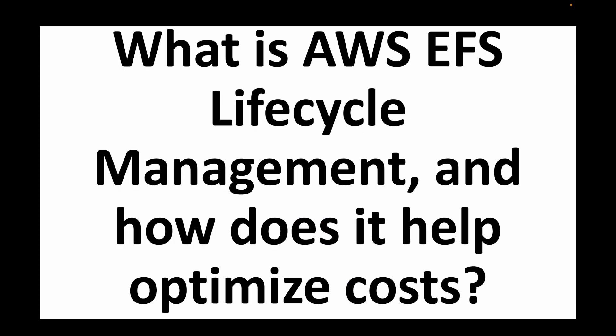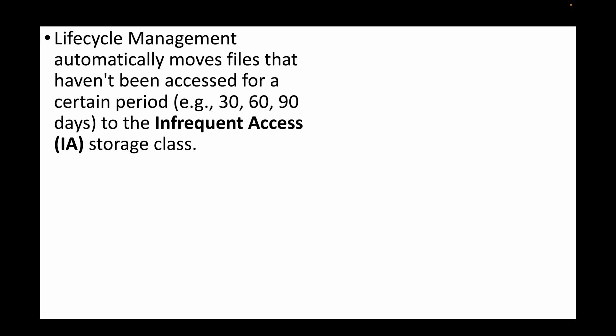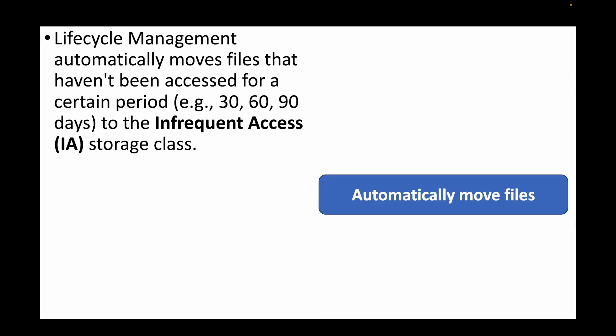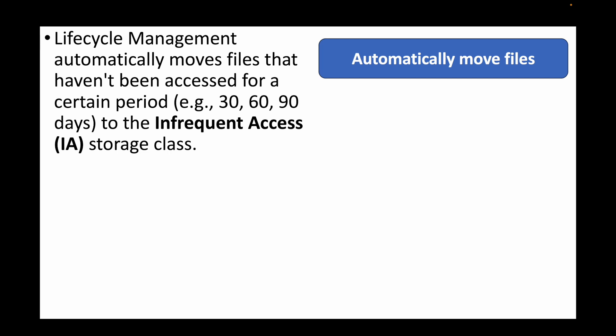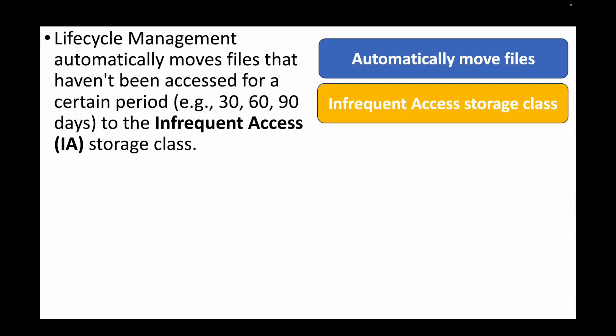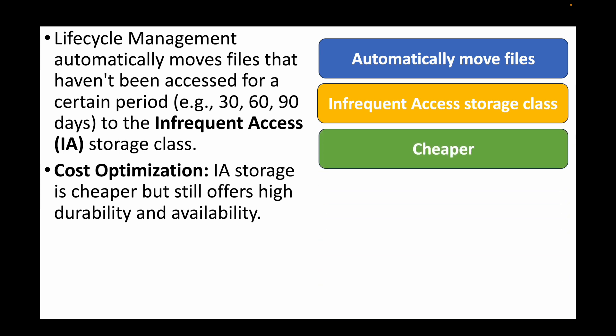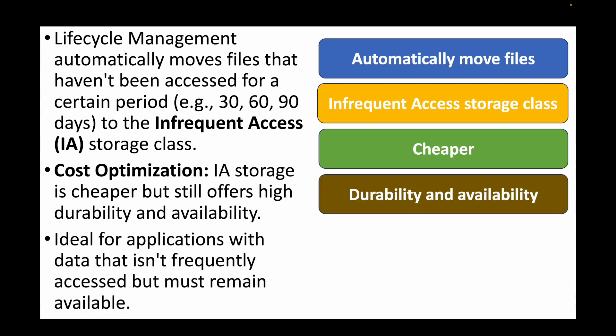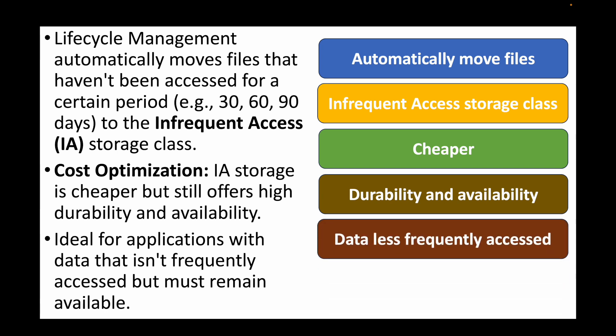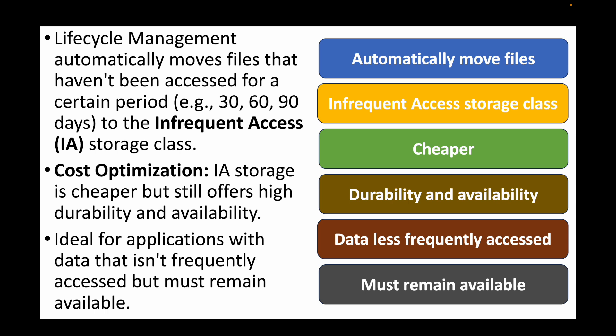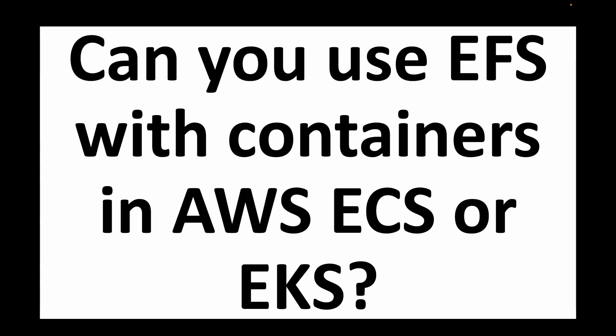The next question is: what is AWS EFS lifecycle management and how does it help optimize costs? Lifecycle management can automatically move your infrequently accessed data to the Infrequent Access storage class, which helps save costs. IA storage is much cheaper compared to standard storage but still offers high availability and durability. This is ideal for applications where data is accessed very infrequently but must still be available.